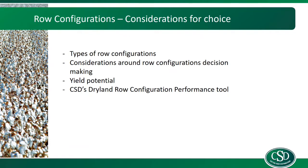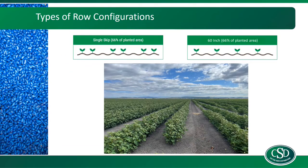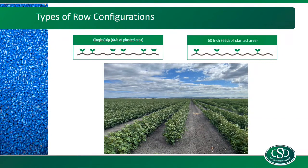We're not playing with rocket science here. One of the most common, if not the most common, row configuration is single skip, and similar to single skip is 60-inch. They both use 66% of the planted area. These two skip row configurations have the least risk of losing yield in favourable seasons out of all the skip row configurations. However, they will use moisture in the profile the quickest.